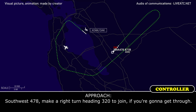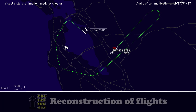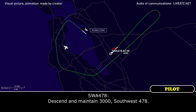ATC: Southbound 478, make it a right turn heading 320 to join since you're going to go through. Southbound 478: Yeah, that sounds good, heading 320, southbound 478. ATC: Southbound 478, descend and maintain 3,000. Southbound 478: Descend to maintain 3,000, southbound 478.